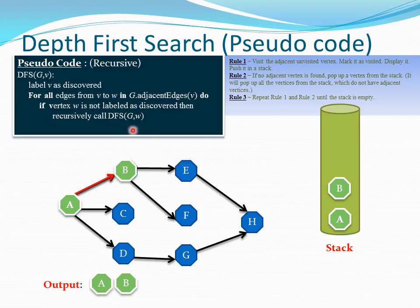We are checking whether w, which carries E, is not labeled as discovered. This is rule one again. It is not discovered so we are recursively calling DFS with graph and w. W carries E here. E will be discovered, so we are saying visited.